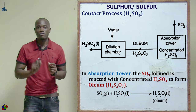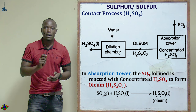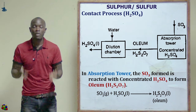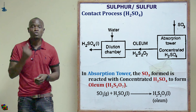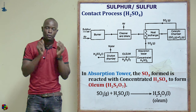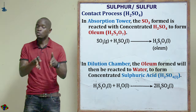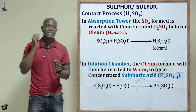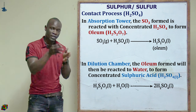SO₃ is not dissolved directly with water because this reaction is highly exothermic, producing excessive heat that could boil the concentrated sulfuric acid and form sulfuric acid vapor, which is highly poisonous to living things. To bypass this hazard, SO₃ is instead reacted with concentrated sulfuric acid to form oleum.